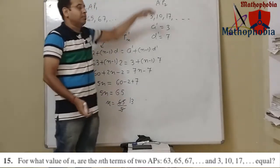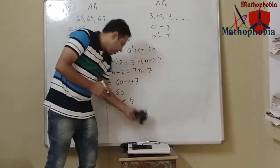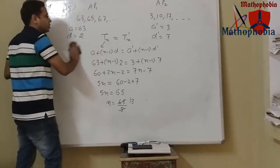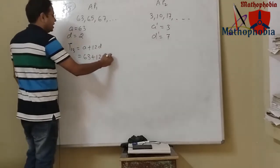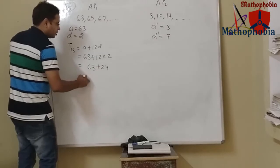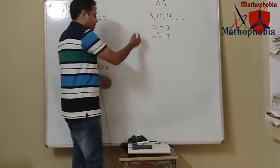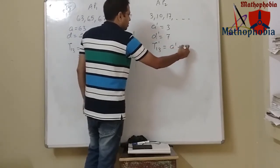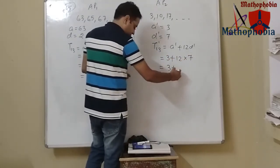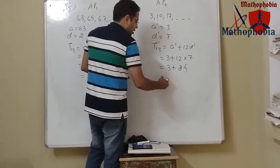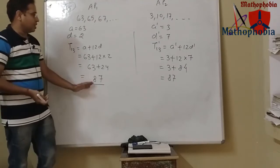Let's verify: T13 of AP1 = 63 + 12×2 = 63 + 24 = 87. And T13 of AP2 = 3 + 12×7 = 3 + 84 = 87. Both give 87, confirming the 13th term of both these APs are equal.